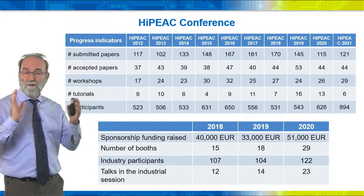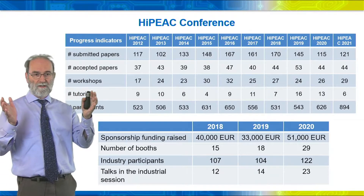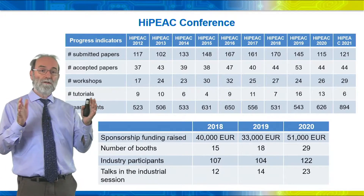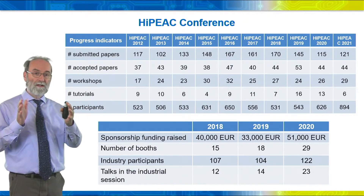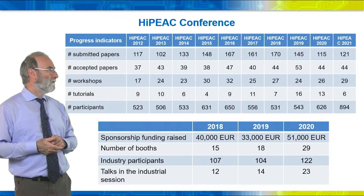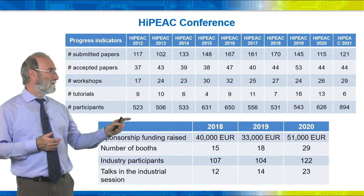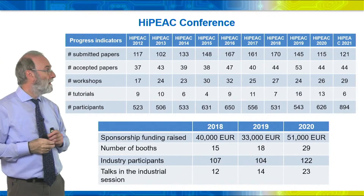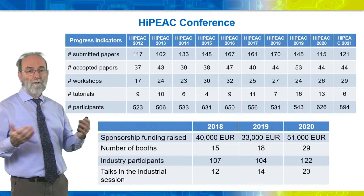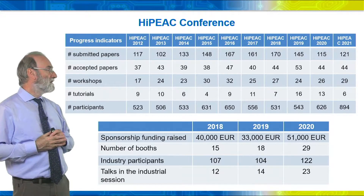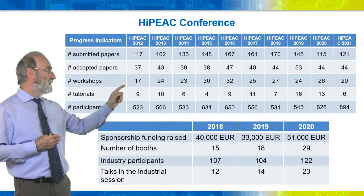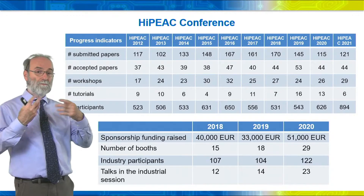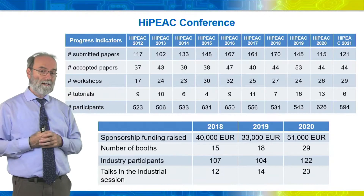In 2012 we attracted between 150 and 200 participants per conference. That year we decided to change things, compressing the conference into three days — running workshops and tutorials in parallel with the main technical track. Immediately we went from 200 to more than 500 participants, and since then attendance has stayed between 500 and 600. In 2021 we got almost 900, but that was a virtual conference where the threshold to participate was lower. We now have between 25 and 30 workshops organized by the community.